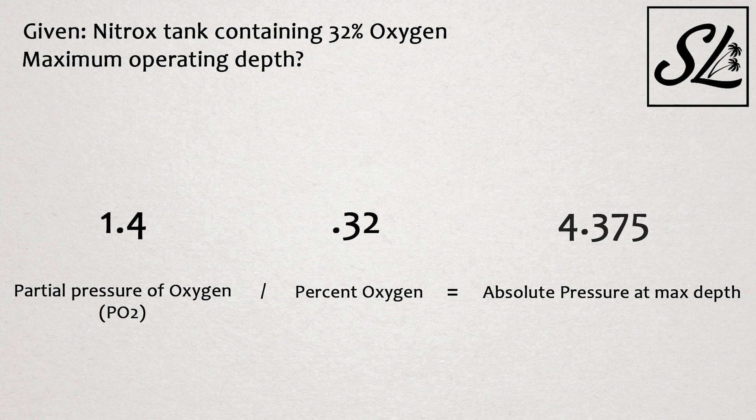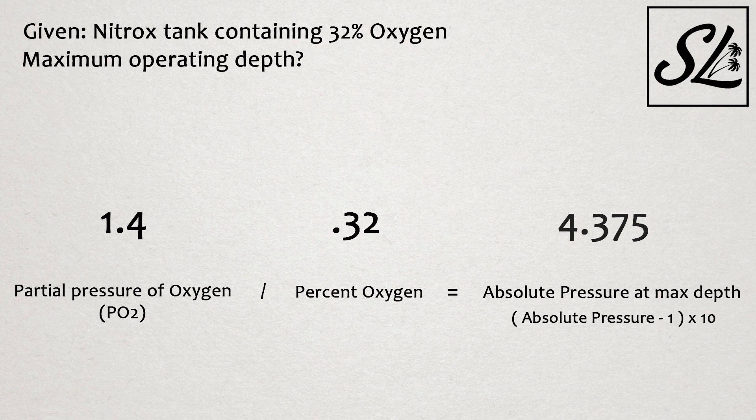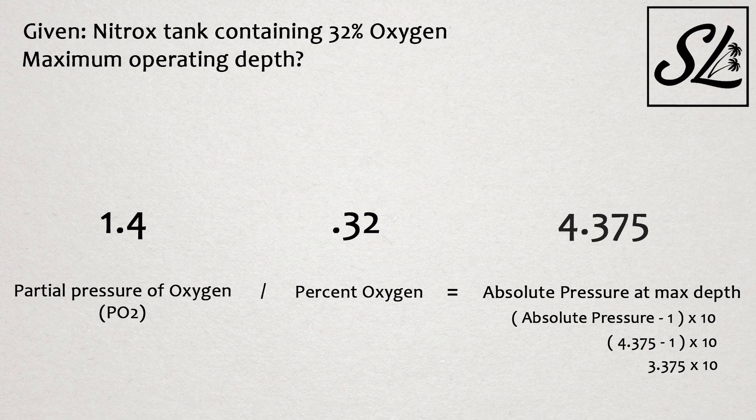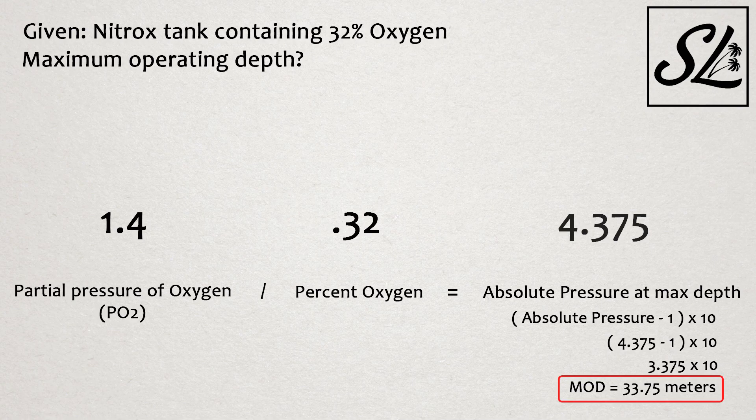So how do we get the depth from this pressure? In order to find the depth at 4.375 bar, we will take our absolute pressure, subtract 1, and multiply by 10. Essentially the same formula as our last problem, just working backwards. This leaves us with a maximum operating depth of 33.75 meters.